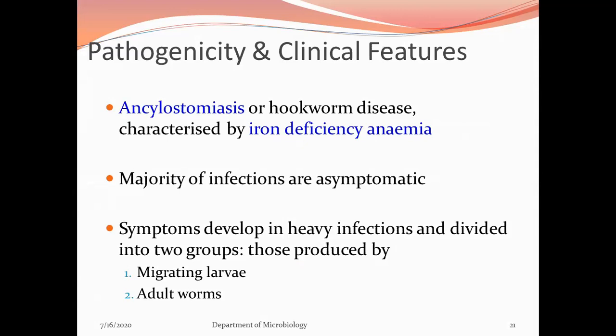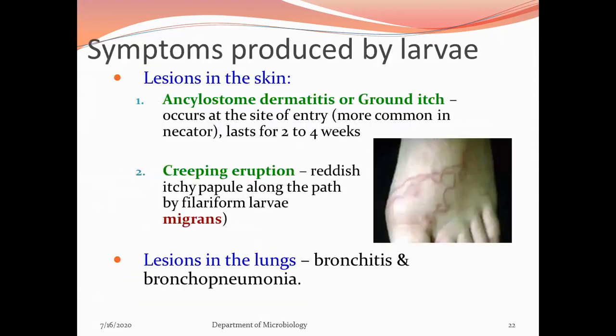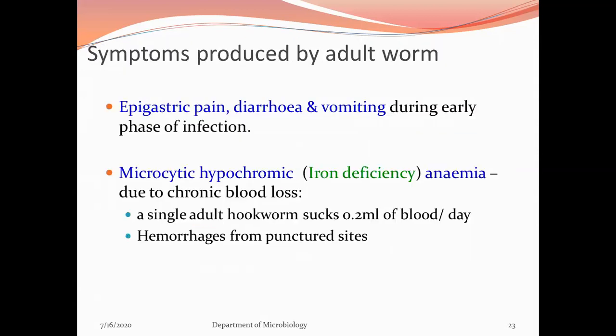Clinical features: symptoms produced by larvae include skin lesions — ancylostoma dermatitis or ground itch — occurring at the site of entry, more common with Necator americanus, lasting 4 weeks; creeping eruption (reddish itchy papules along the path of filariform larva migration); and lesions in the lungs — bronchitis and bronchopneumonia. Symptoms produced by adult worms include epigastric pain, diarrhea and vomiting during early phase of infection, and microcytic hypochromic iron-deficiency anemia due to chronic blood loss (a single adult worm ingests 0.2 mL of blood per day), and hemorrhages from punctured sites.